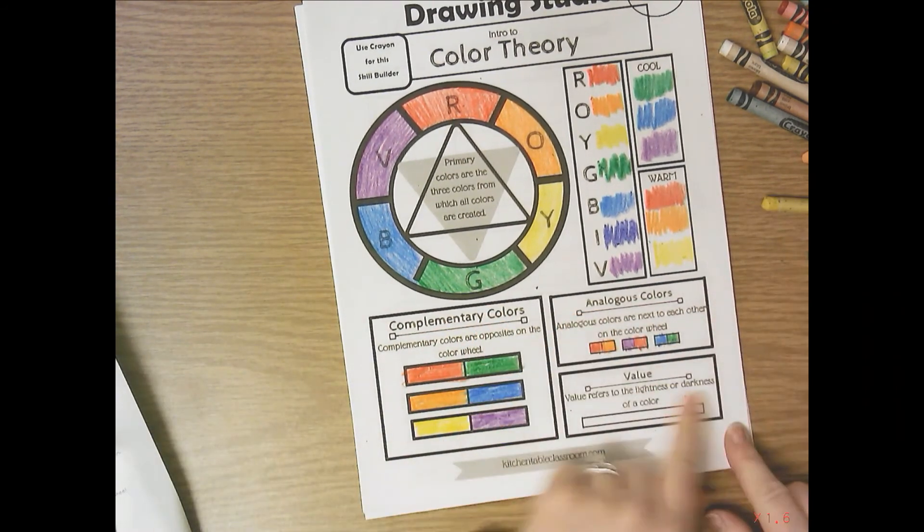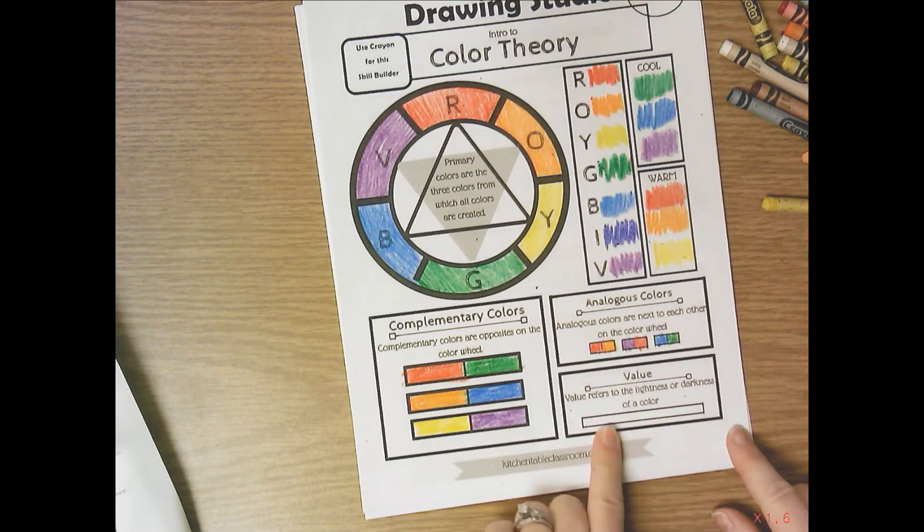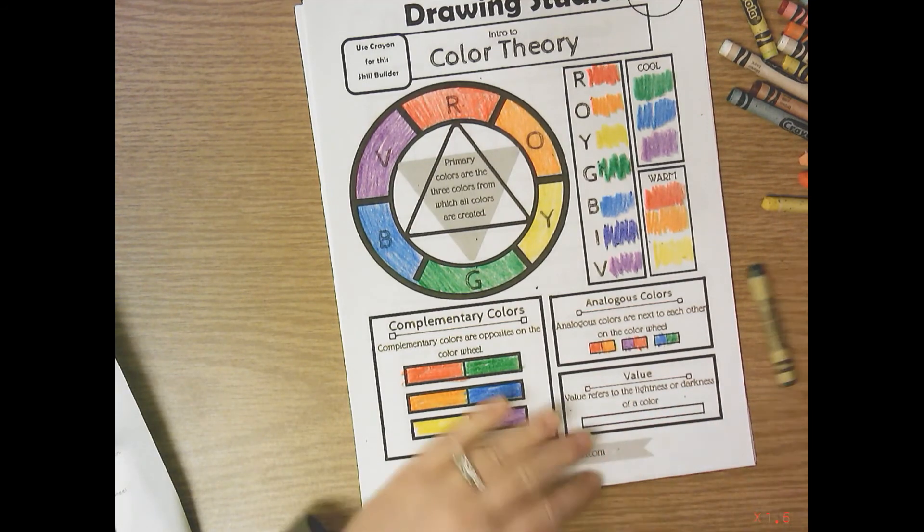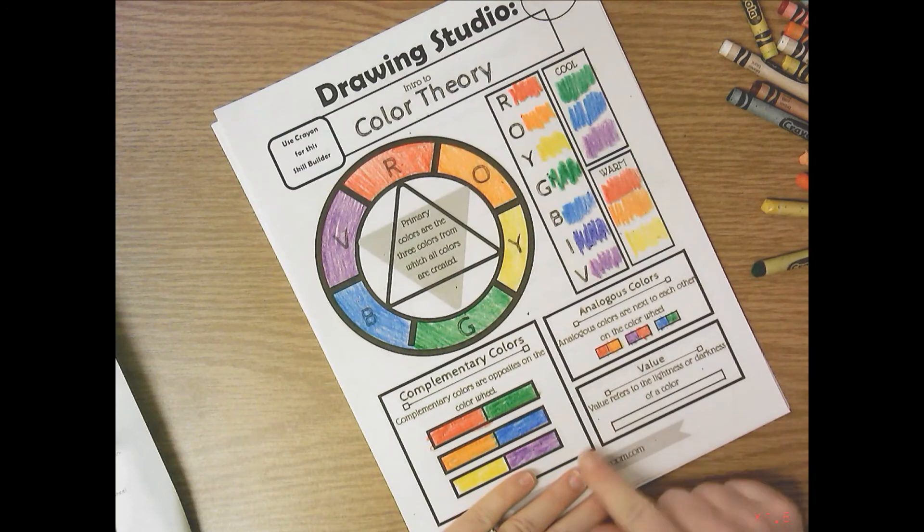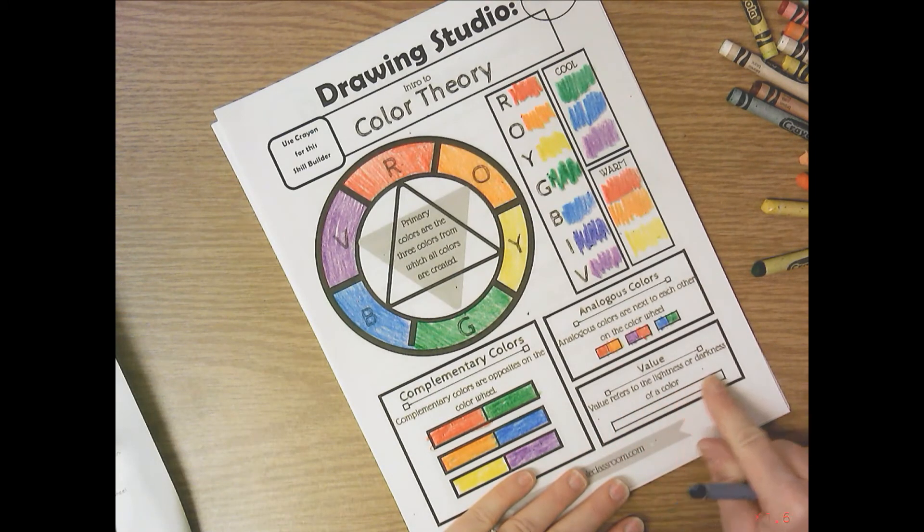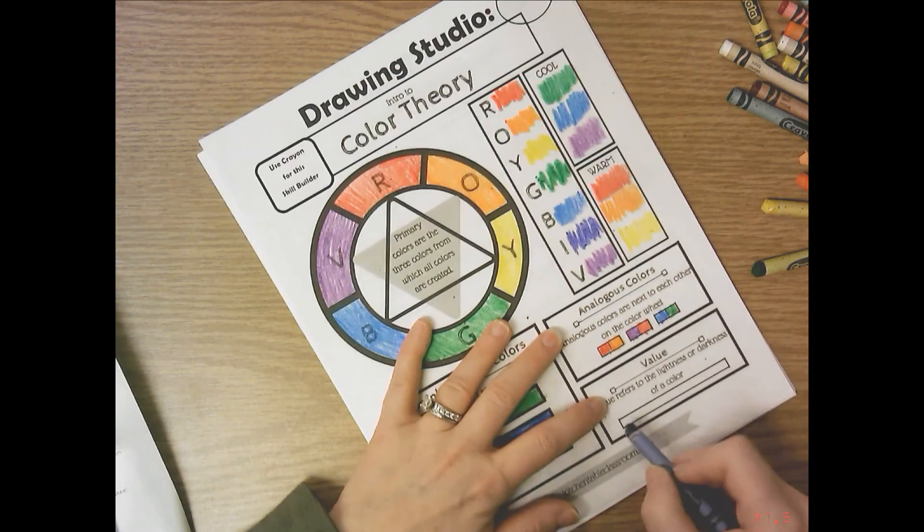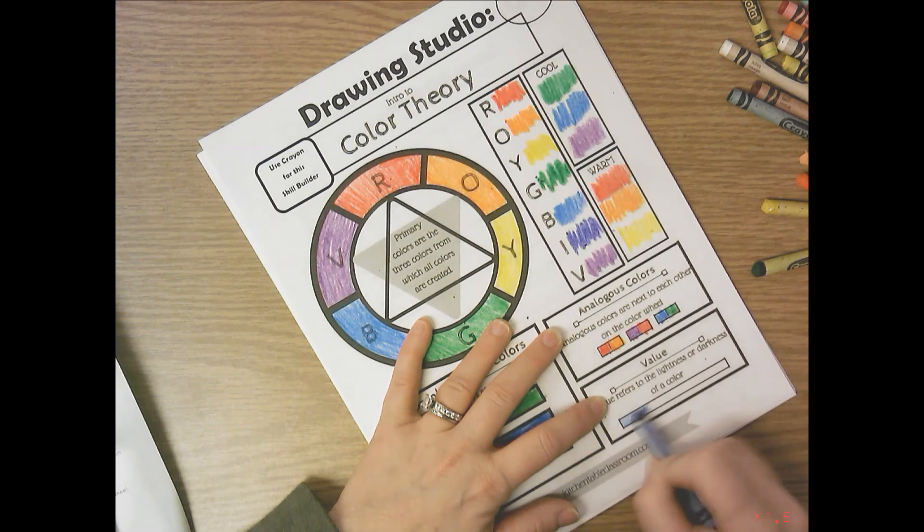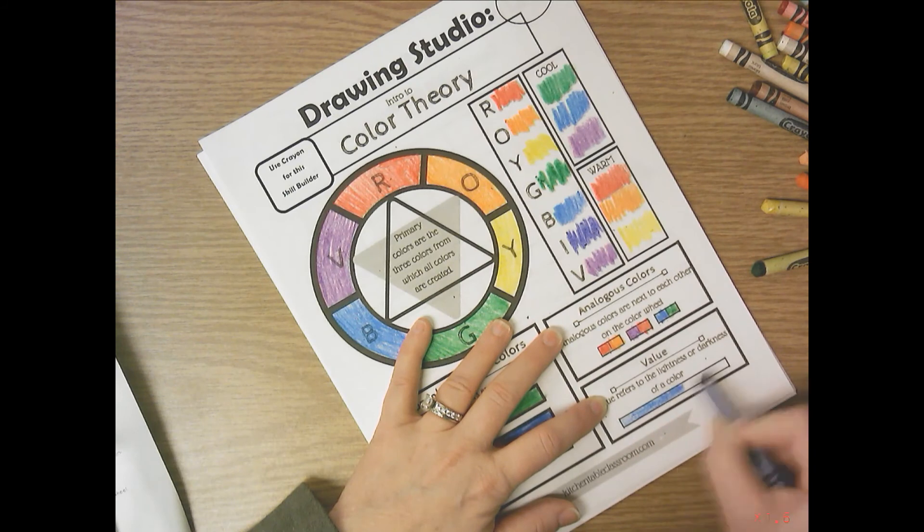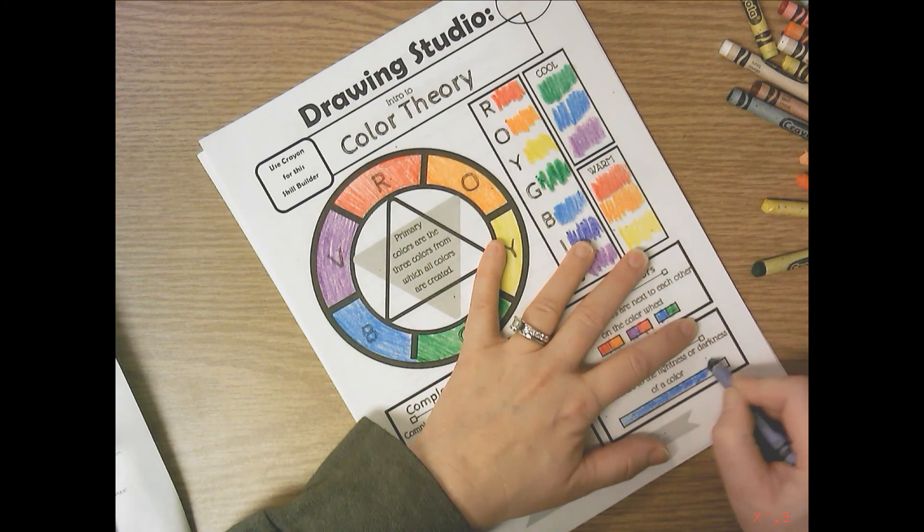And then value refers to the lightness or darkness of the color. So you're going to pick one of those crayons and you're going to either start lightly, color as you go across into this rectangle and get darker, or you'll do the opposite, start dark and get light. And it needs to be gradual and not look stripey. So you're just going to keep adding more and more pressure, how hard you press with the crayon to make this strip get darker and darker.